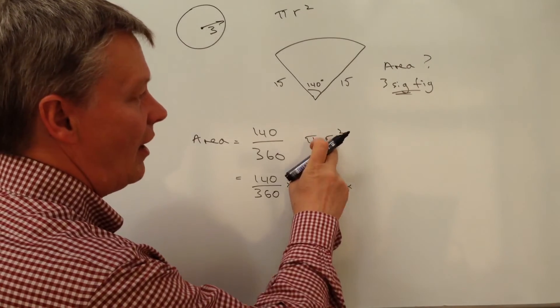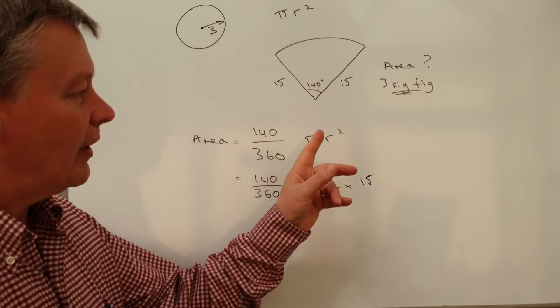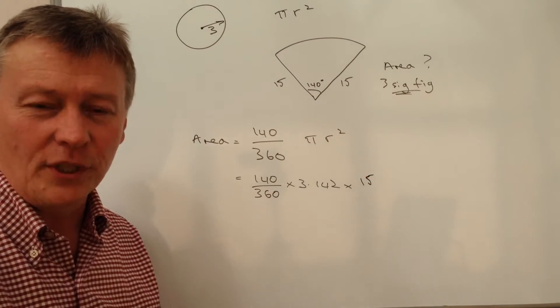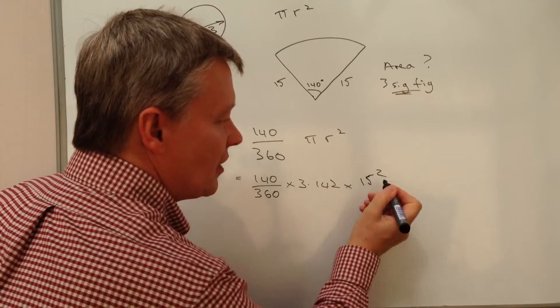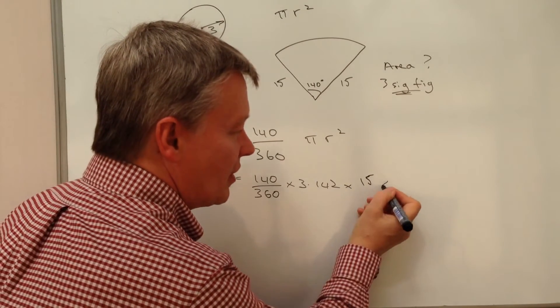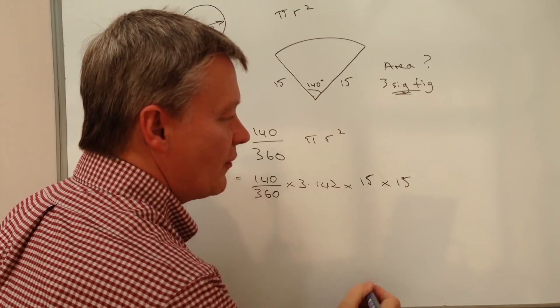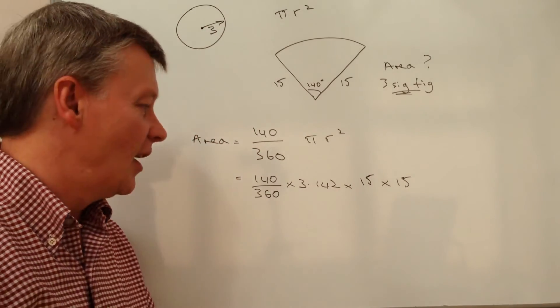And then I'm going to put in the r, which is the radius. Now, bearing in mind it's r squared, which means radius times radius. So you can either write it as r squared or sometimes I do it myself, I write it as 15 times 15, just to remind myself that it is radius squared.